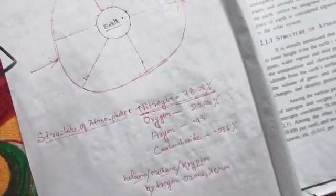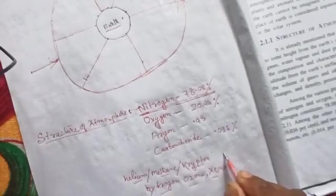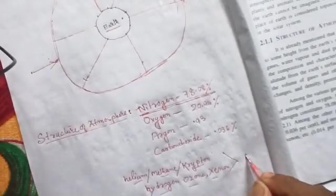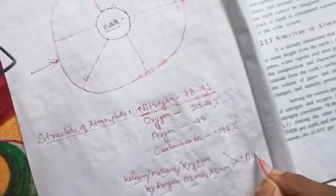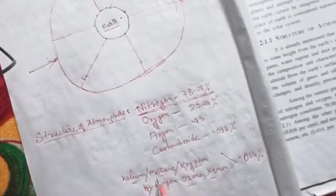And helium, methane, krypton, hydrogen, ozone, and xenon are 0.014% of these gases.